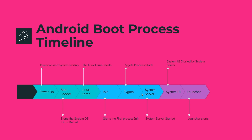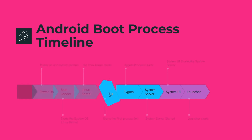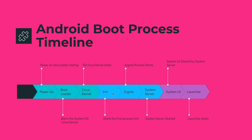In the previous sessions, we covered the init process and zygote process. We also looked at the code from where zygote forked the system server process. Let's start from there and see what exactly system server is doing.